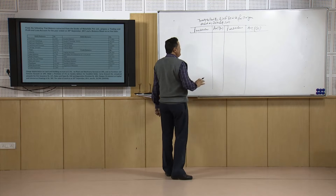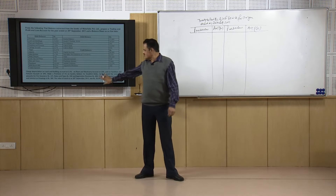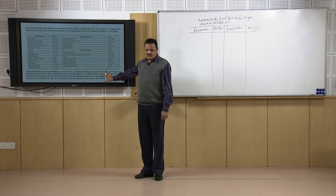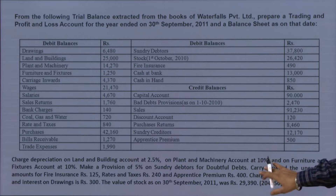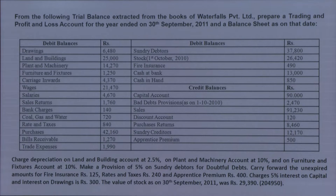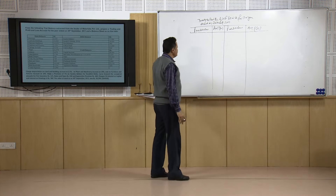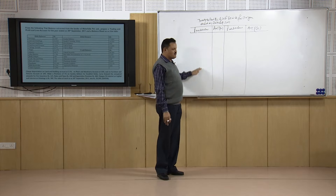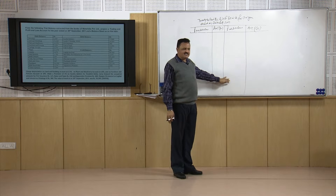We will recall what we learned and prepare it again, but the difference is that earlier the additional information was not there, and now it is. Earlier we had not adjusted this information, but now we will have to adjust it and take the final figures to the trading and profit and loss account and then to the balance sheet.